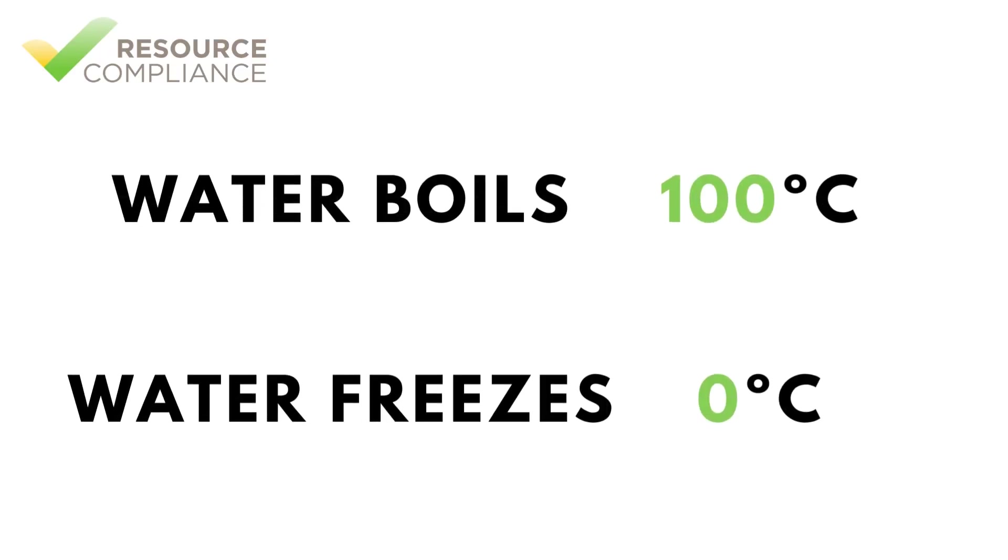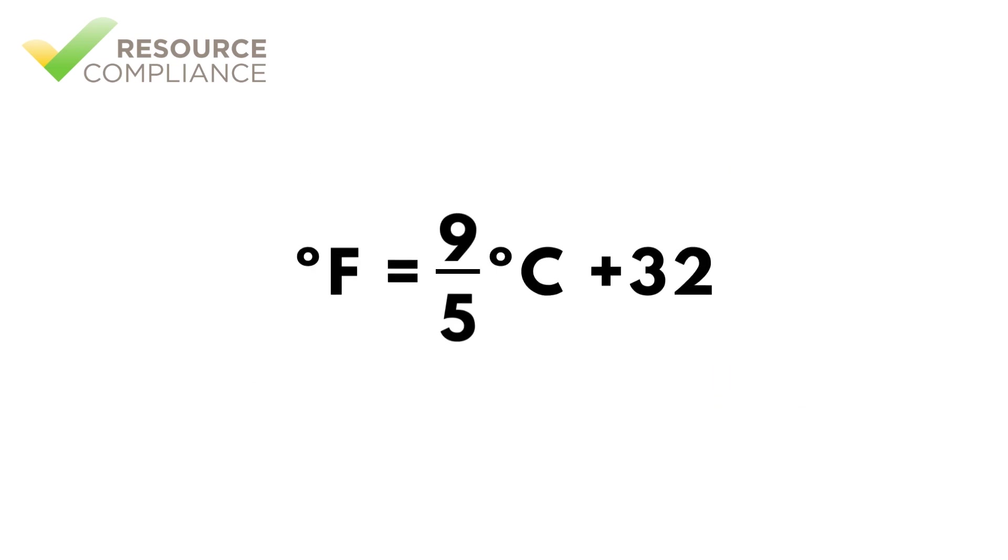The equation to convert from degrees Celsius to degrees Fahrenheit is: degrees Fahrenheit equals 9/5 times degrees Celsius plus 32. The equation can be rearranged using algebra to convert from degrees Fahrenheit to degrees Celsius.